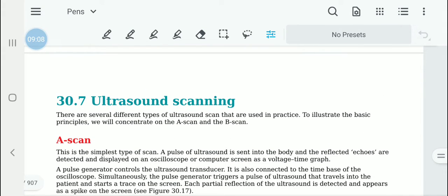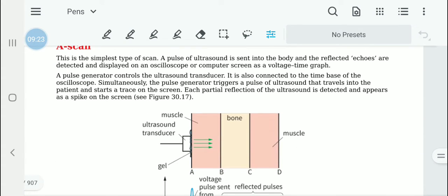There are many different types of ultrasound scans. We will be looking at A scan and B scan below.